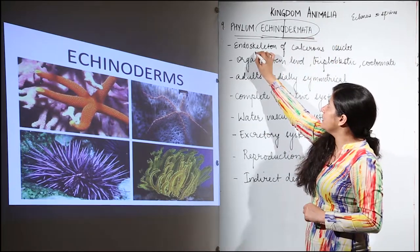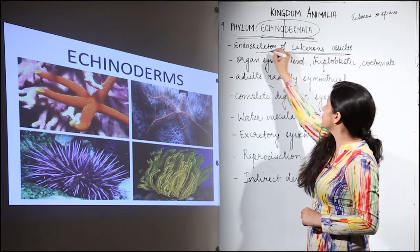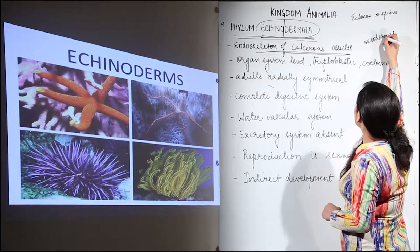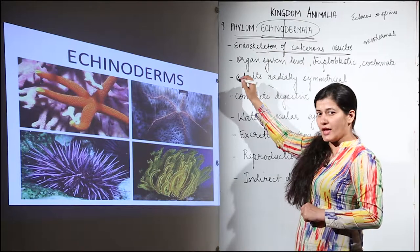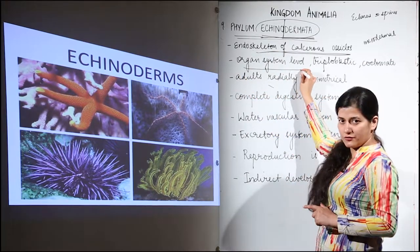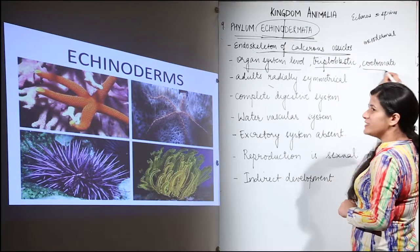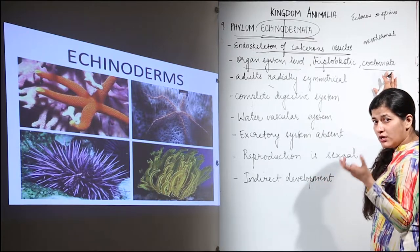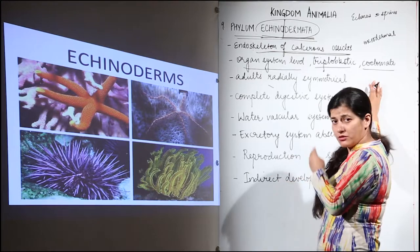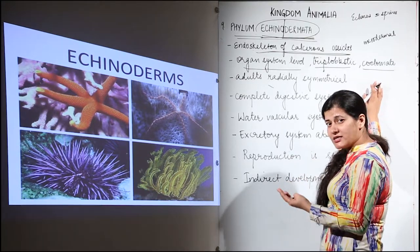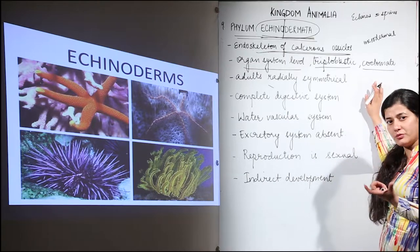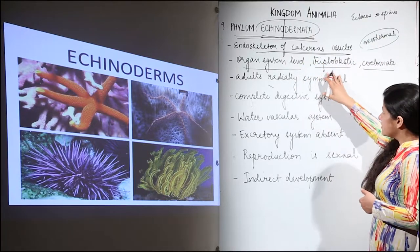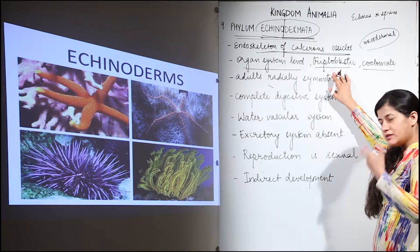Echinoderms have an endoskeleton made up of calcareous ossicles which are mesodermal in origin — so there is a mesodermal skeleton present. They show organ system level of organization, and they are triploblastic and coelomate. Of course they are coelomate organisms — that is why they are placed in the ninth position. They have three germ layers, and inside those layers there is a coelom.